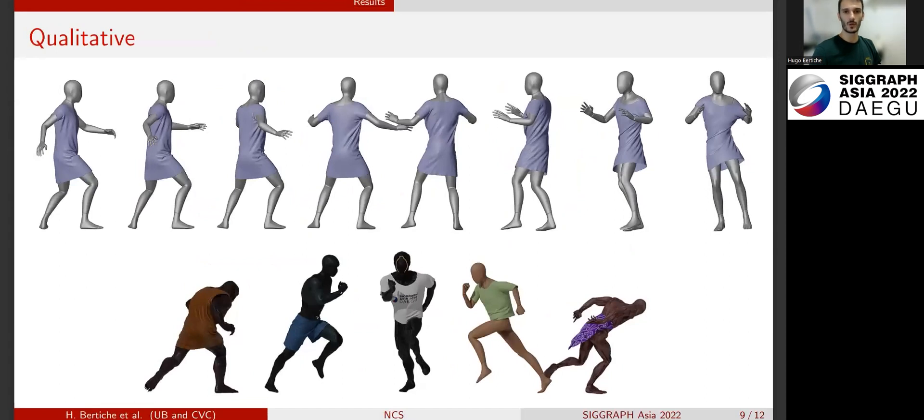Here, we show more qualitative results. On the top row, we show a mannequin wearing a dress performing spinning motion. On the row below, we show more results trained on different bodies and different garments. Since we do not require simulated garment data, applying our methodology to new bodies and garments is straightforward.